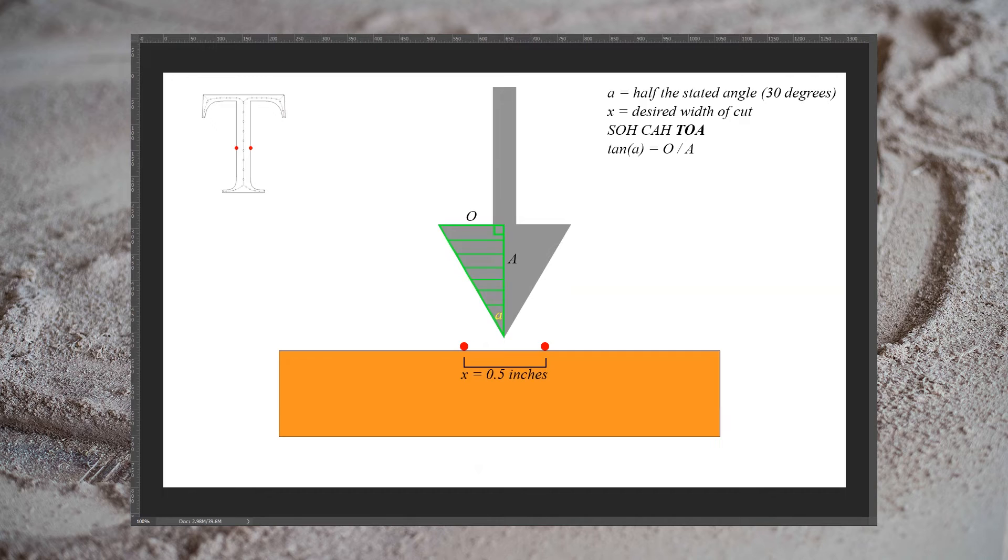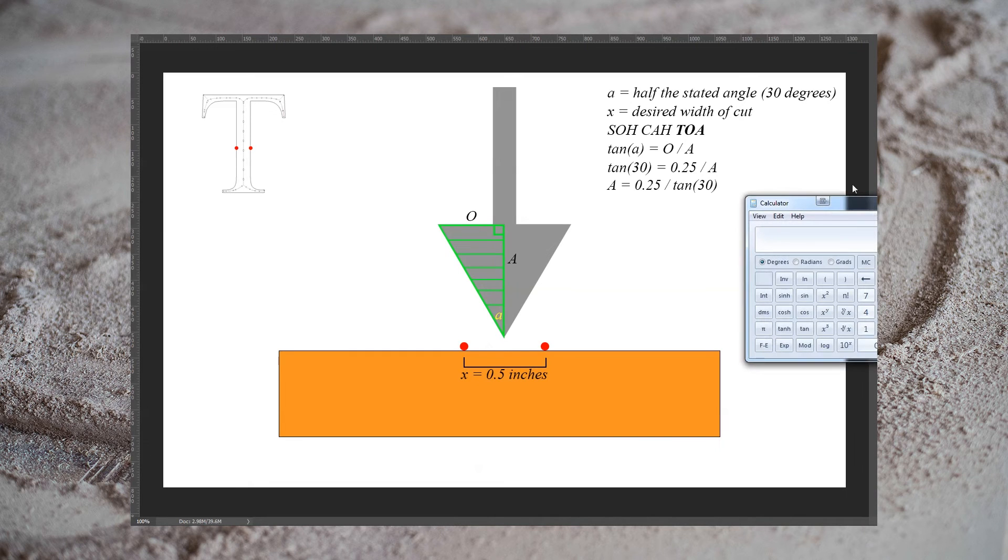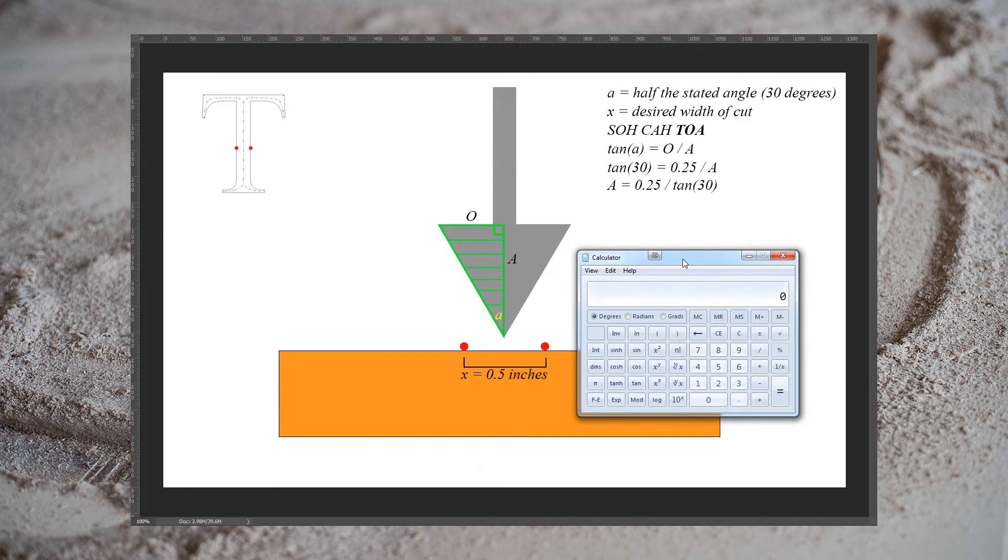We start with the formula that the tangent of angle A is equal to the opposite side over the adjacent side. We can swap in the information we have, such as angle A being 30 degrees, and our desired width being half of x, since we're only dealing with half the bit. We can rearrange the formula by multiplying both sides by A, and then dividing both sides by the tangent of 30. And then we can make the calculator do the hard work. 0.25 divided by tangent 30 equals 0.43 inches.